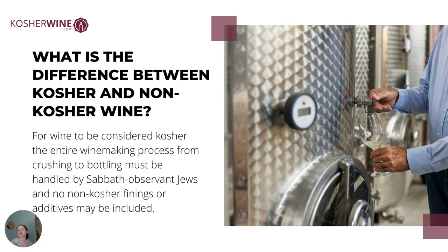So what's the difference between kosher and non-kosher wine? Actually, as part of the winemaking process — nothing. For a wine to be considered kosher, the entire winemaking process from start to finish, crushing to bottling, must be handled by Sabbath-observant Jews, and no non-kosher finings or additives can be used. But as far as the grape-to-bottle winemaking process that we're going to talk about, all of that is the same. Wine is wine, and good wine is great wine.